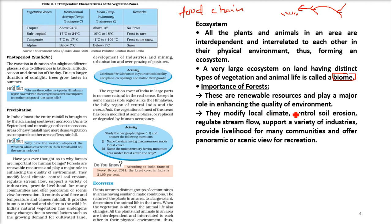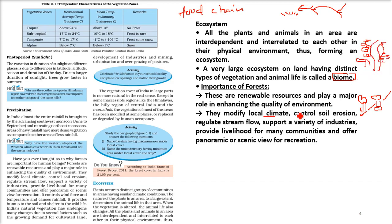Forests are responsible for modifying the local climate because leaves give a lot of evaporation. Trees have roots that grab the soil, so water cannot take the soil away — it controls soil erosion. It regulates stream flow, provides raw material for industries, and gives livelihood to forest-dependent communities in terms of food and animals.